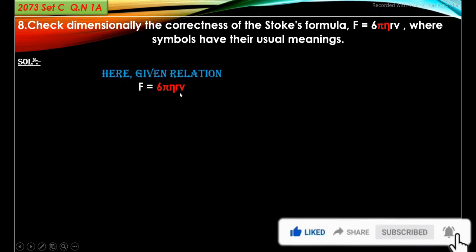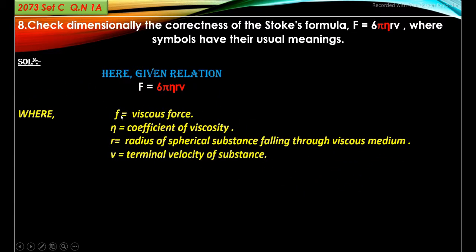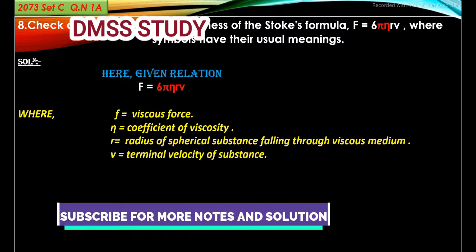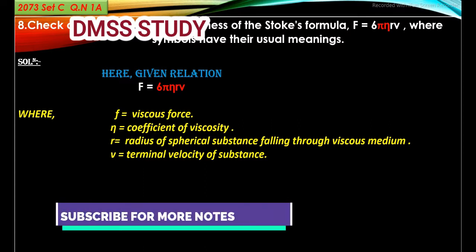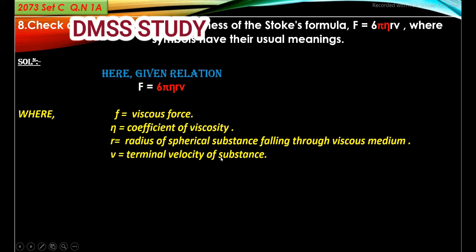Given relation: F = 6πηrv. Here, F is viscous force, η is coefficient of viscosity, r is radius of a spherical substance falling through the viscous medium, and v is terminal velocity of substance.